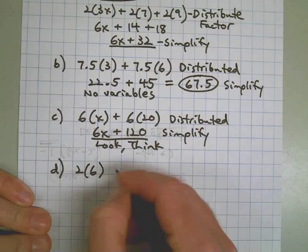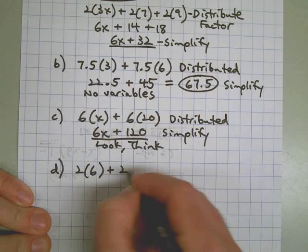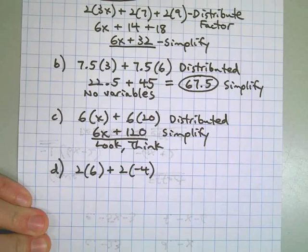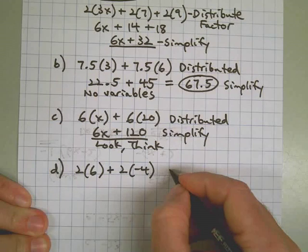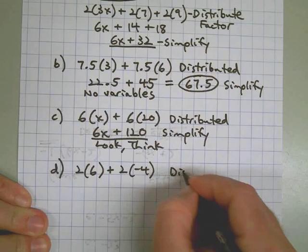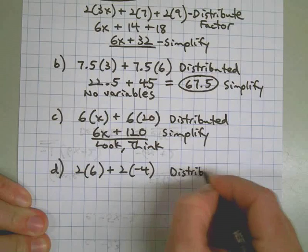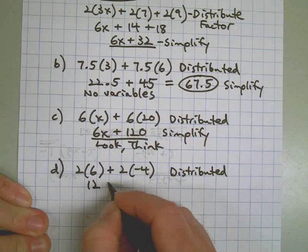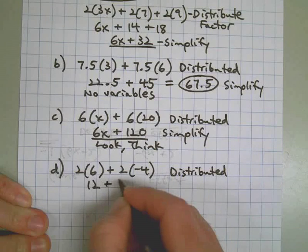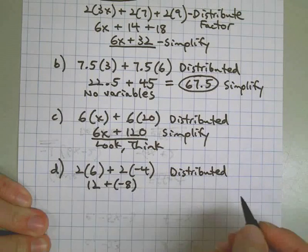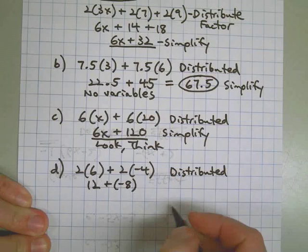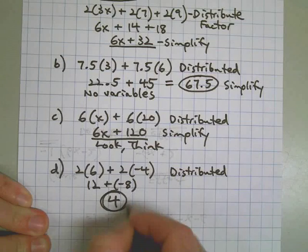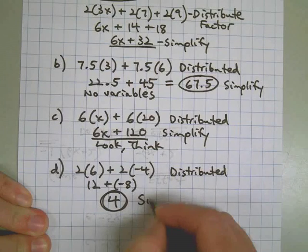Part D: two sixes and two negative fours. This is just like Part B — we're already in distributed form. Two sixes makes twelve, and two negative fours makes negative eight. Now if I add these together: twelve positives and eight negatives leaves me with four. That is as simplified as you can get.